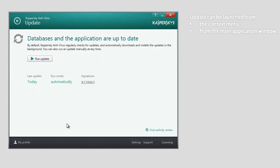In the update window, click the Run Update button. This will start the update of the antivirus databases and application modules.